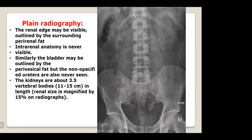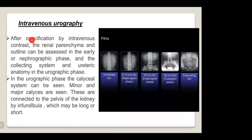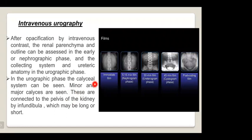On intravenous urography (IVU), after opacification by intravenous contrast, the renal parenchyma and collecting system can be assessed. In the early nephrographic phase, the renal parenchyma is seen. The collecting system and ureteric anatomy are seen in the urographic phase. The immediate film is followed by a 5–15 minute nephrographic phase, a 30-minute urographic phase showing the collecting system and ureter, a 45-minute cystographic phase showing the bladder, and a post-voiding film to assess for residual urine.